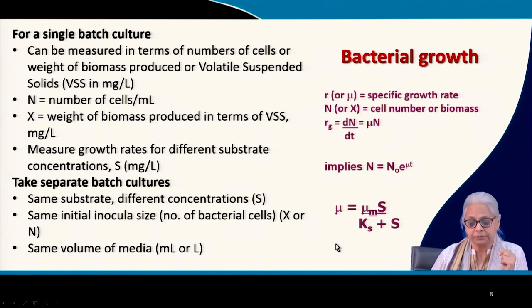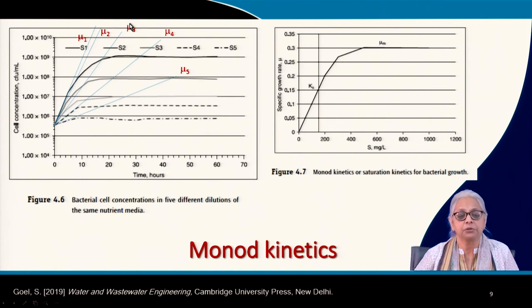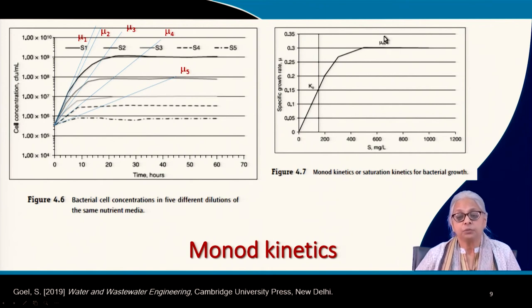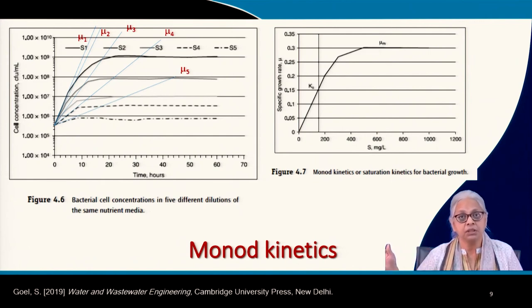We now have a series of mu values that we can plot against S. With 5 S values and corresponding mu values, plotting mu versus S gives a curve that levels off. There is a point at which you reach maximum growth rate — regardless of how much you increase S beyond that point, the mu value will not change. That is mu_max.